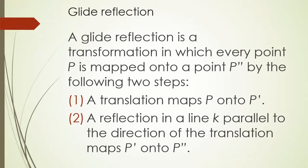Let's look at some vocabulary. Our first definition is glide reflection. A glide reflection is a transformation in which every point P is mapped onto a point P'' by the following two steps. First, you're going to do a translation that maps P onto P'. Then, you're going to do a reflection in a line K parallel to the direction of the translation, which maps P' onto P''.